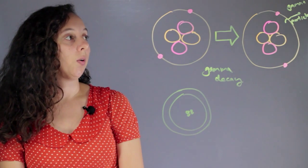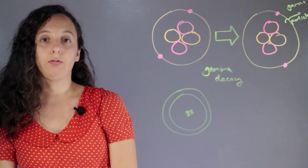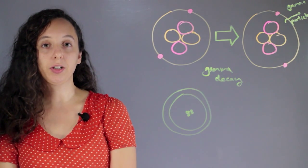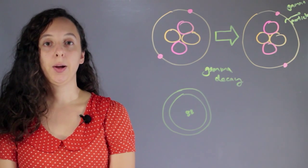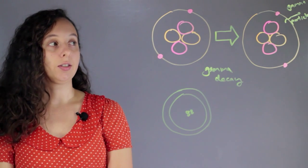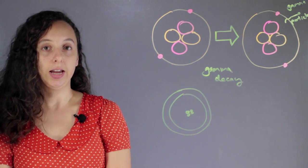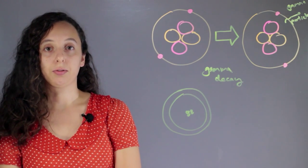So what is a gamma particle? Well it's a very mathy topic and it has a lot to do with quantum mechanics and it's very complicated but basically it's a state that the entire atom was in going from a higher state to a lower state.